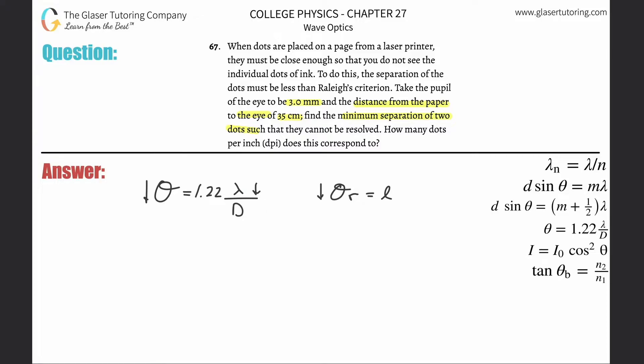Now they didn't tell us the wavelength, so we're assuming visible light. I talked about this in number 66 — there are certain assumptions. You can choose the minimum wavelength of visible light if you want, or you can choose the average value. I'm going to choose the average value, because I feel like that might be a slightly more appropriate assumption. But you can feel differently and I necessarily wouldn't argue with you.